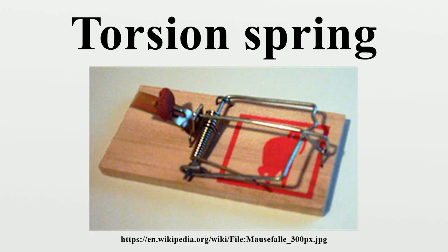A torsion bar suspension is a thick steel torsion bar spring attached to the body of a vehicle at one end and to a lever arm which attaches to the axle of the wheel at the other. It absorbs road shocks as the wheel goes over bumps and rough road surfaces, cushioning the ride for the passengers. Torsion bar suspensions are used in many modern cars and trucks, as well as military vehicles. The sway bar used in many vehicle suspension systems also uses the torsion spring principle.